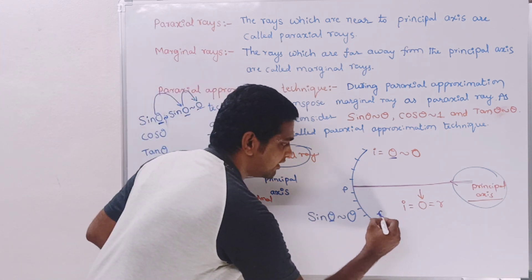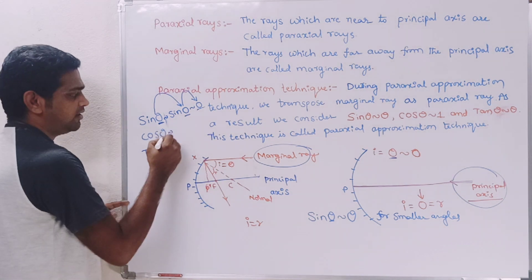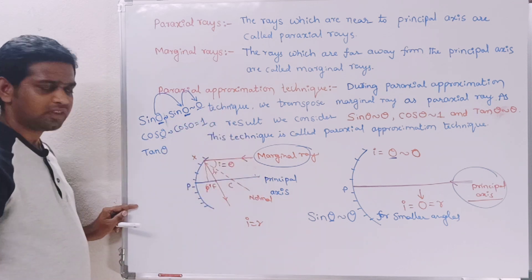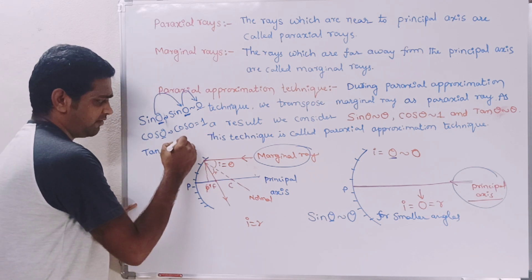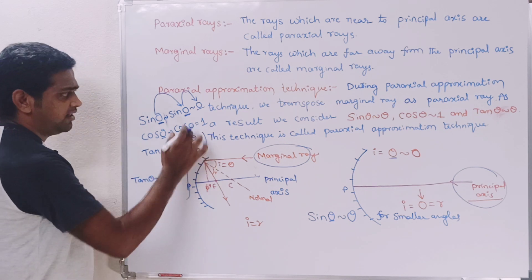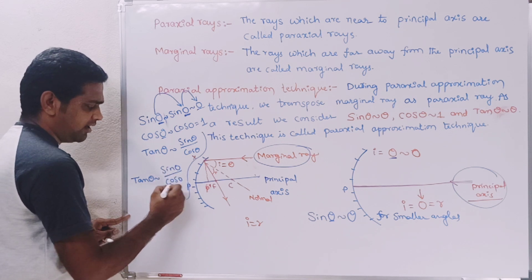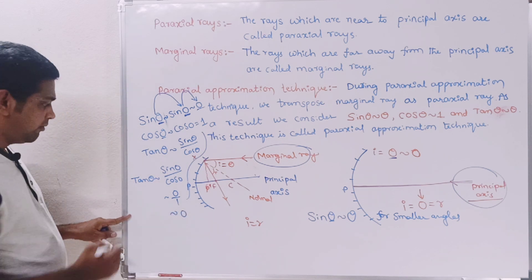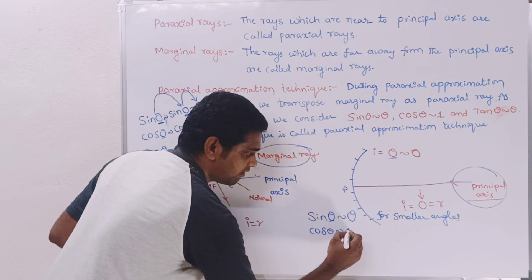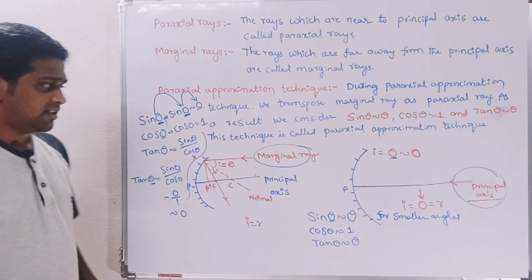For smaller angles, sin θ is approximately equal to θ. Similarly, substituting θ ≈ 0 into cos θ gives cos 0, which equals one. And since tan θ = sin θ / cos θ, substituting gives sin 0 divided by cos 0, which is zero divided by one, giving zero. So therefore cos θ is approximately equal to 1.